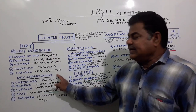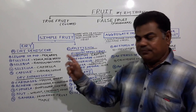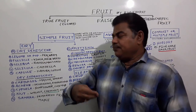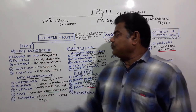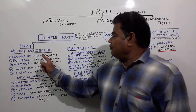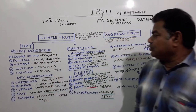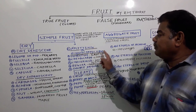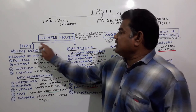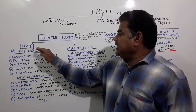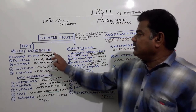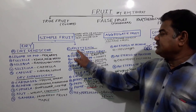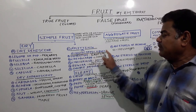Dry fruits are differentiated into dry dehiscent fruits — in which the fruit splits after formation like a legume — dry indehiscent fruits, and splitting or schizocarpic fruits.